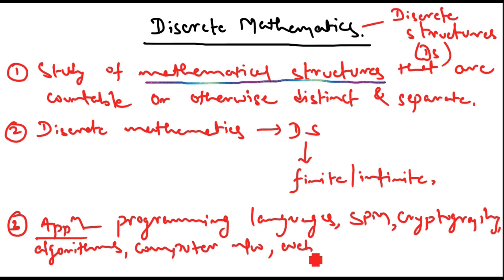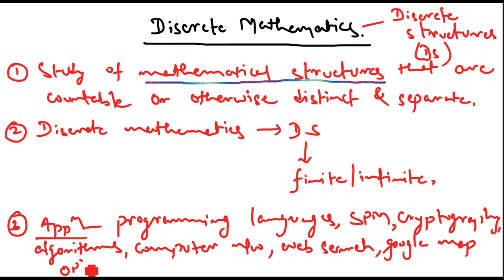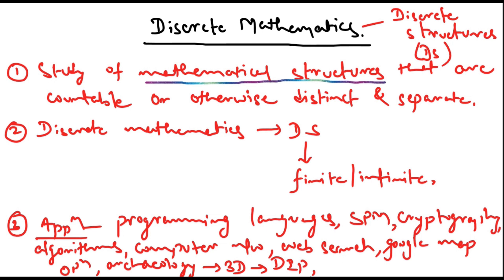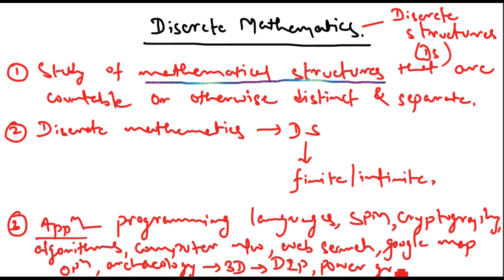Web search is another application. Similarly, Google Maps operation uses discrete mathematics. Archaeology and 3D image rendering — basically digital image processing (DIP) — is also a use case. Archaeological modeling, power grid applications, radar and sonar systems, and so on — there are so many applications where discrete mathematics finds utilization.